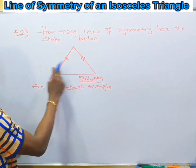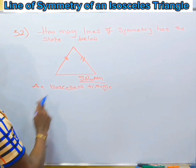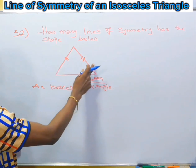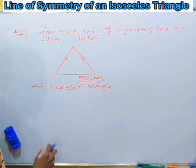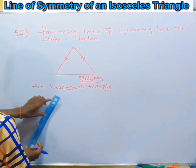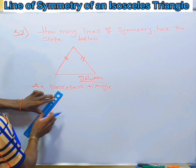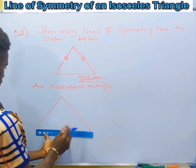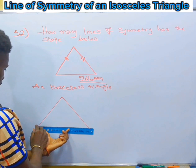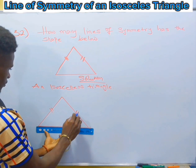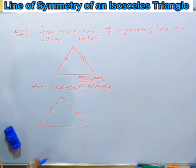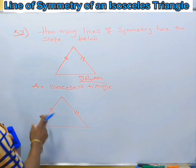Which means the two opposite sides are equal, and that denotes an isosceles triangle. For every isosceles triangle that has opposite sides equal, the line of symmetry will be gotten by finding the line that divides the shape into two equal halves. A line that divides the shape into two equal halves is referred to as the line of symmetry.